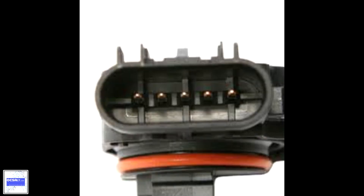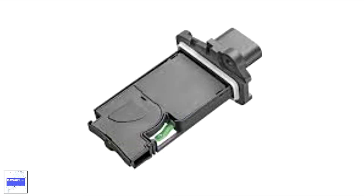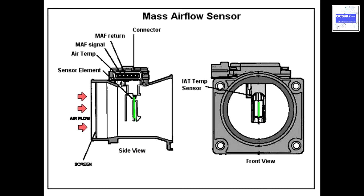The passing air cools the wire down. The more air flows over the wire, the more electrical current is needed to keep it hot. The electric current is proportional to the amount of air flow. A small electronic chip installed inside the air flow sensor translates the electric current into a digital signal and sends it to the engine computer, PCM.